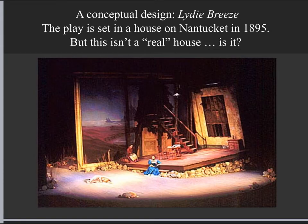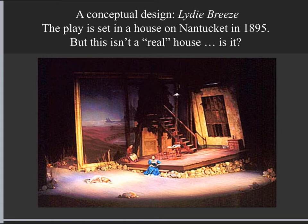This is from a play called Lighty Breeze, which takes place on the island of Nantucket in 1895 in a house. We have some elements of a crumbling house, a sense of a beach with rocks, sand, wooden floorboards, and sky in the background. But this isn't a real house — it's obviously some sort of metaphor or abstract concept. There's a big giant picture frame behind the house, a sense of overwhelming things pressing down on a small girl, and the natural world creeping into the man-made world of this house.